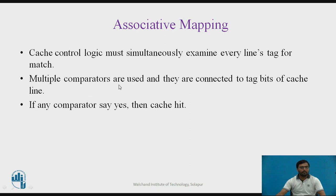Multiple comparators are used and connected to the tag bits of each cache line. All comparators check the tag bits simultaneously. If any one of the lines gives a match (says yes), it is a cache hit — that block of main memory is present in that cache line. Otherwise, it is a cache miss.